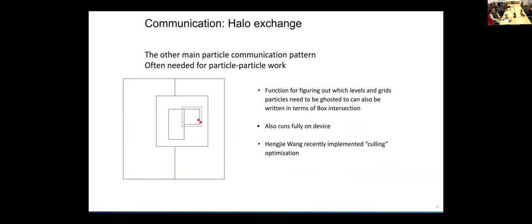The other main communication pattern that comes up when you're doing particle operations is that you need to do a halo exchange. You need to grab copies of particles that are close to you, because they could potentially go on the neighbor list for a particle that's local to your box. Again, as with redistribution, we provide a version of this operation that runs fully on the device. There's also advanced options for culling particles that don't belong in any neighbor list so that you're not having to communicate extra data.